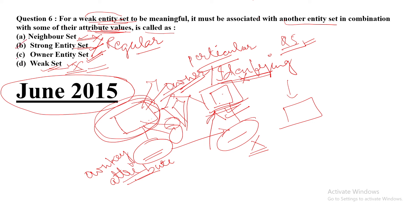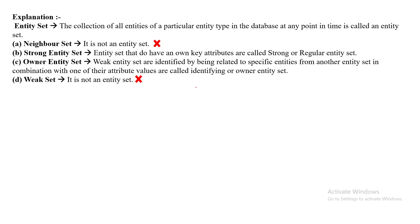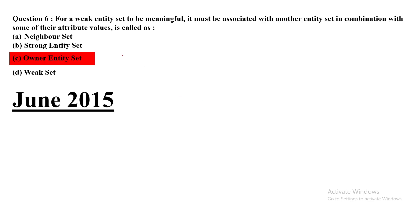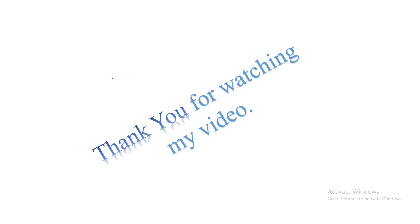So you might be confused between strong entity set and owner entity set. A strong entity set, also called a regular entity set, has its own key attribute but does not support a weak entity set. An owner entity set does support a weak entity set. For ER model diagrams and descriptions, refer to question number 1. The correct answer is option C — owner entity set. I hope you understood everything. Thank you for watching my video.